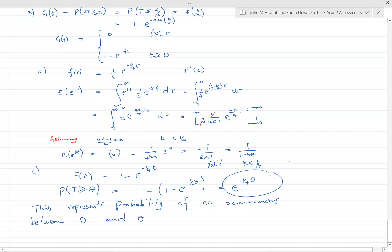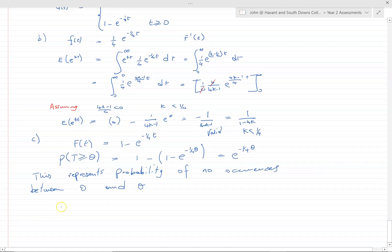So this represents probability of no occurrences between 0 and θ. Now you should be familiar with the Poisson formula, so now we consider the Poisson with λ = θ/4.